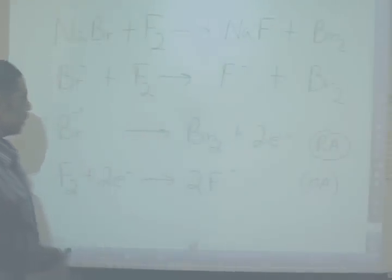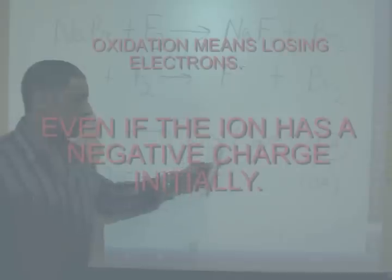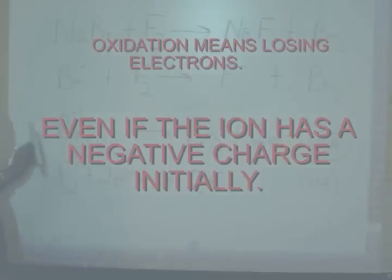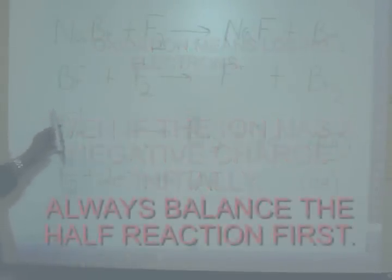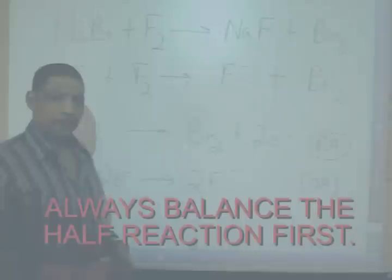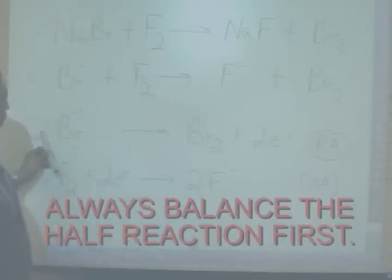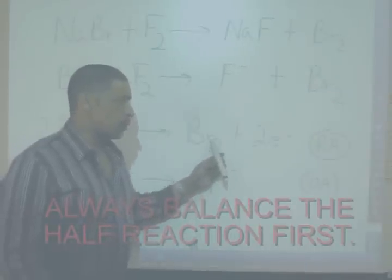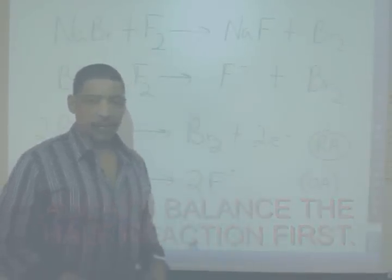The two half reactions are as follows. Bromine starts out as an ion, the bromide ion, which produces bromine, which is diatomic. Therefore, we must balance the mass in this half reaction by placing the coefficient two in front of the bromide. Therefore, two bromides undergo oxidation to produce liquid bromine releasing two electrons.